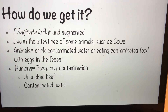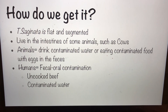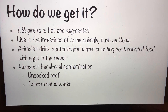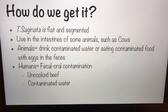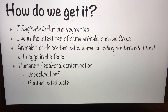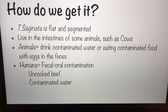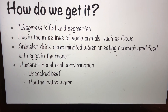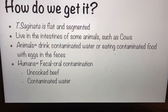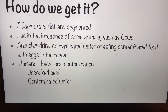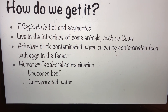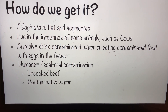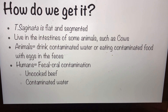So many of you may be wondering how do we get it? It occurs when animals drink contaminated water or eat contaminated food with eggs and feces. These eggs go inside of the cow, and then when humans come in contact and eat undercooked beef or contaminated water, humans contract the worm. These worms live in the intestines of animals such as cows or humans.